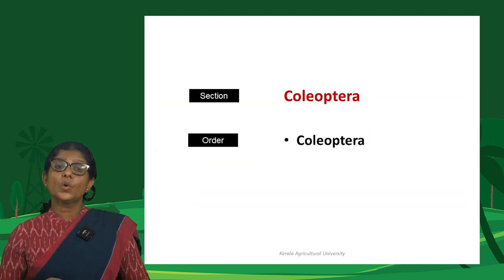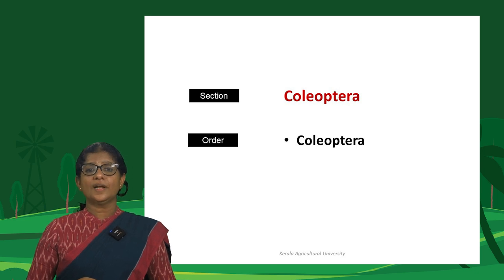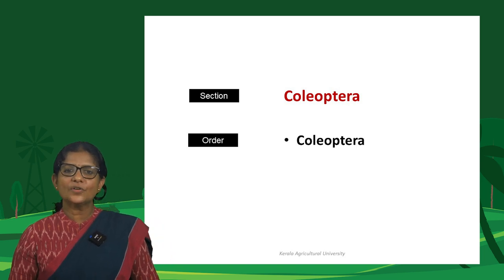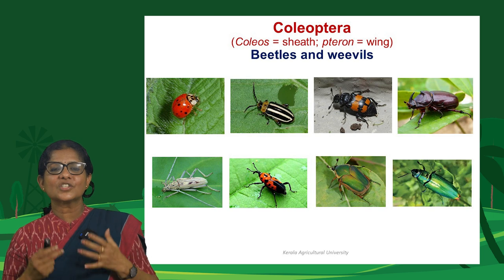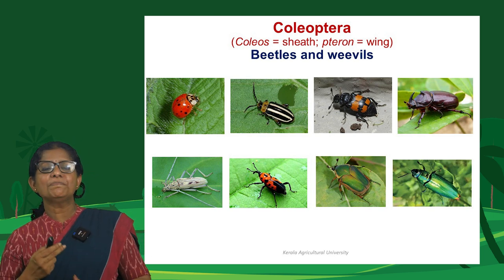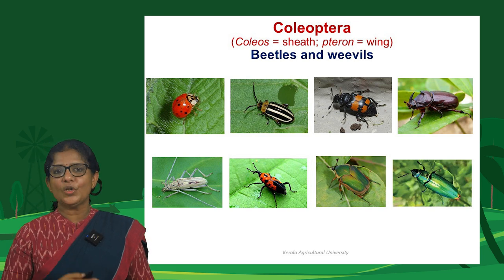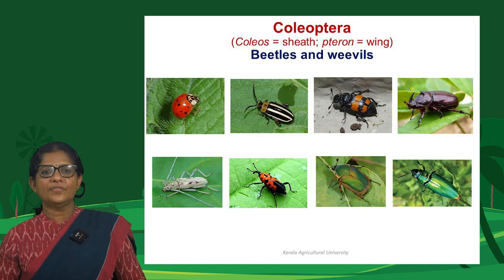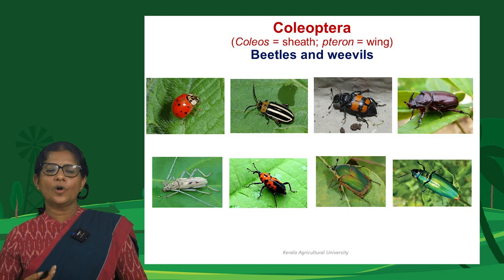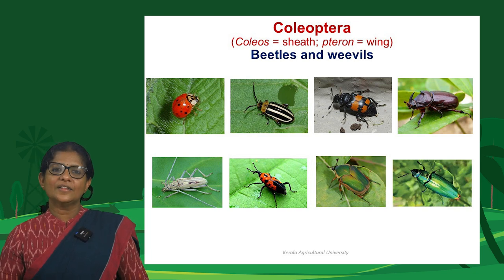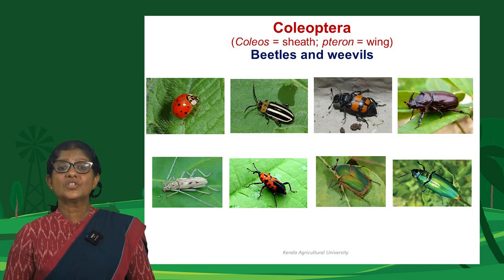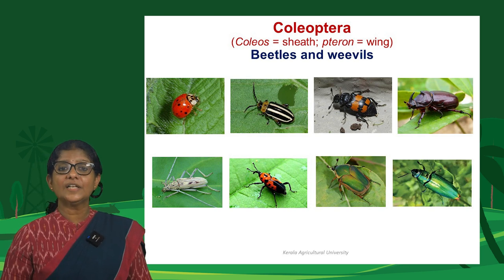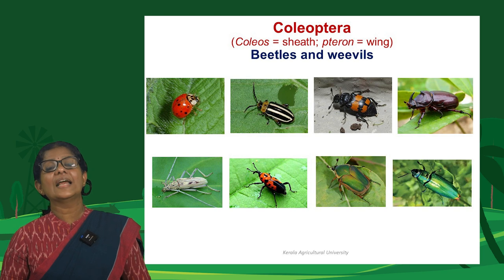Section Coleoptera includes only one order: Coleoptera (beetles and weevils). It is the largest order in class Insecta — nearly 60% of all insects belong to Coleoptera. Their forewings are hardened, sheath-like, protective structures called elytra, which gave the order its name.